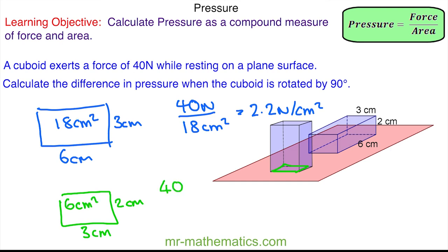The force is still 40 N divided by a smaller area of 6 cm², so the new pressure is approximately 6.7 newtons per centimeter squared. So the difference between the two is approximately 4.5 newtons per centimeters squared.